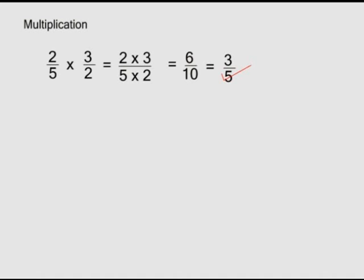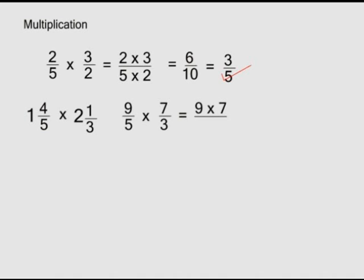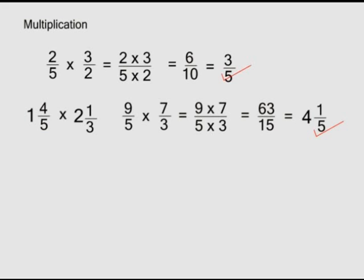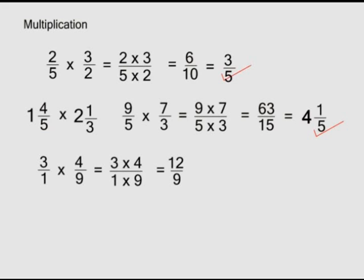For mixed fractions, we first convert them into improper fractions. One and four over five times two and one over three becomes nine over five times seven over three, giving us nine times seven over five times three, which is sixty-three over fifteen, or four and three over fifteen. Simplifying the proper fraction gives four and one over five. When multiplying a fraction with a whole number, make the whole number a fraction with a denominator of one. So three times four over nine becomes three over one times four over nine: three times four over one times nine is twelve over nine, which simplified is four over three, or as a mixed fraction, one and one over three.